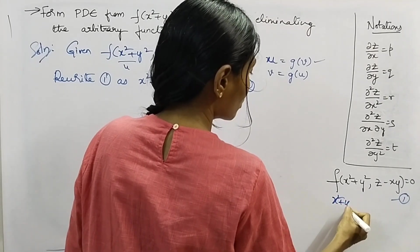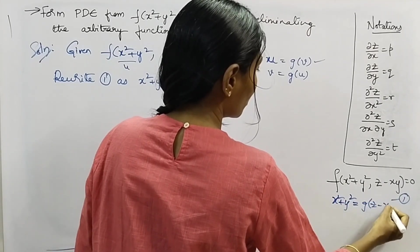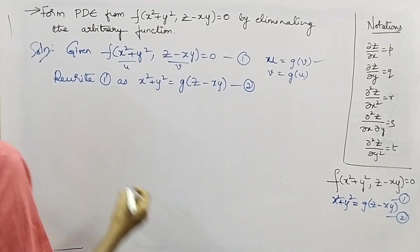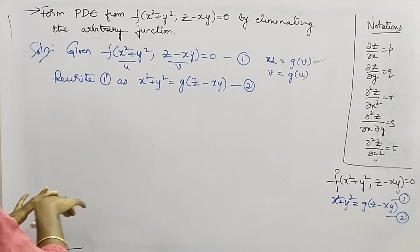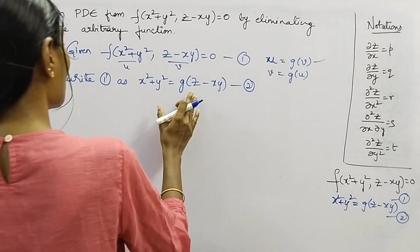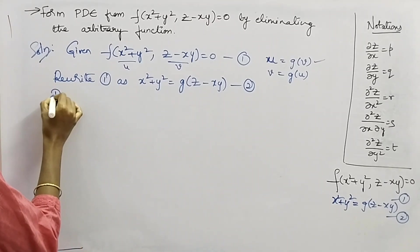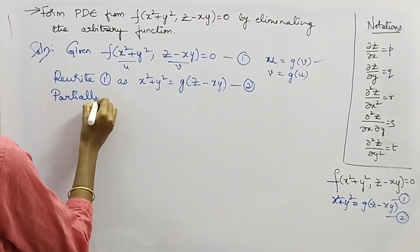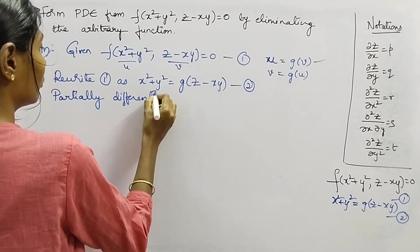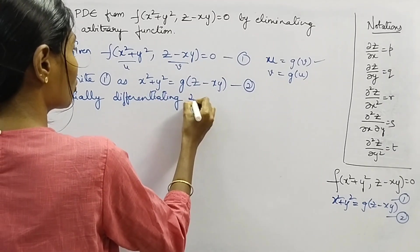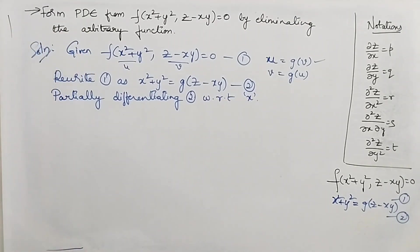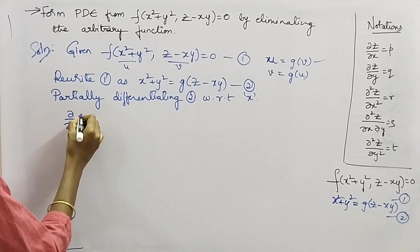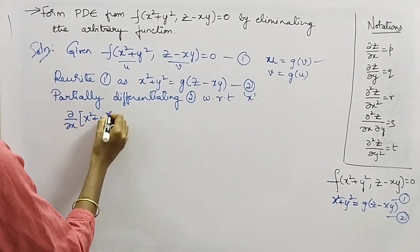We have x² + y² = g(z − xy), which is equation 2. Now let's partially differentiate it with respect to x and also with respect to y. First, I'll partially differentiate it with respect to x — applying ∂/∂x on both sides of equation 2.